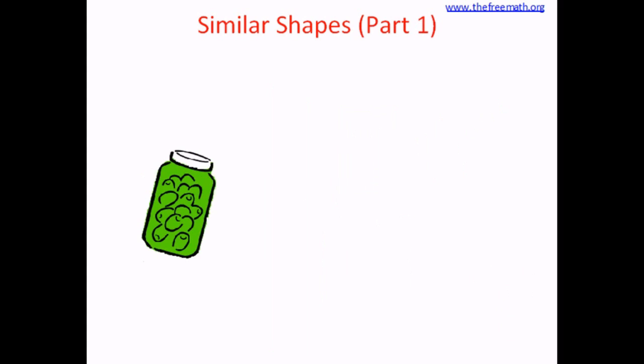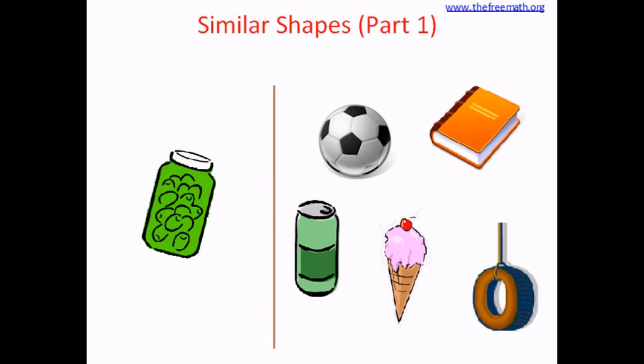Let's see what is next. We have a jar. What does this jar look like? Does it look like a book? No. Does it look like a can? Yes. The jar looks like the can. So the jar and the can are similar shapes. Their shapes are like each other.